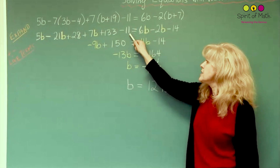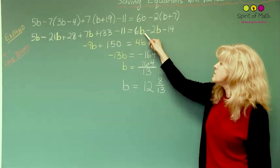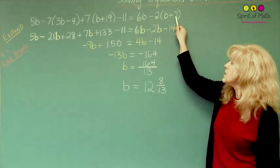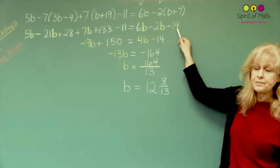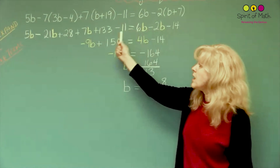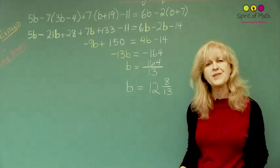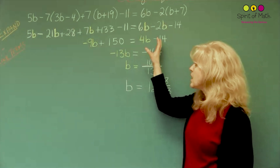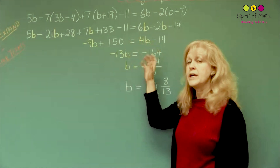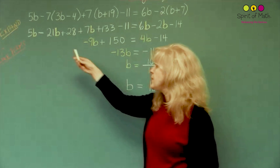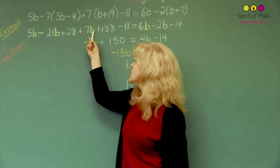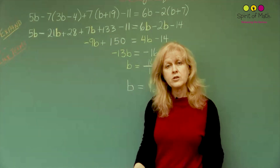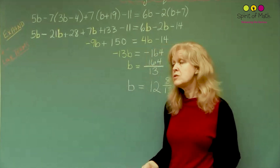I also have a minus 11. In this case it's just 6b, and you have negative 2 times b which is negative 2b, and then negative 2 times 7 is negative 14. After you've multiplied it all out, now you can start moving some of the numbers around and adding and subtracting — this is called adding and subtracting like terms. Like terms would be the b's, because they all have the same variable. The numbers without a variable are considered like terms as well.